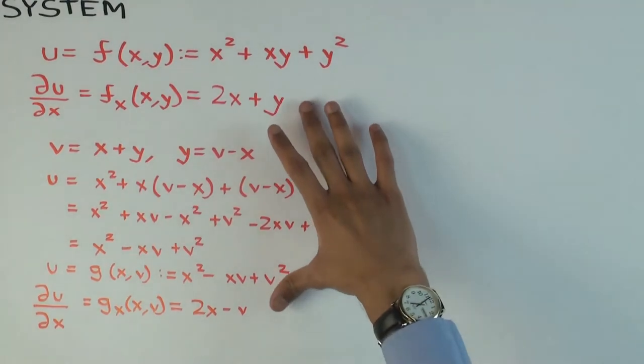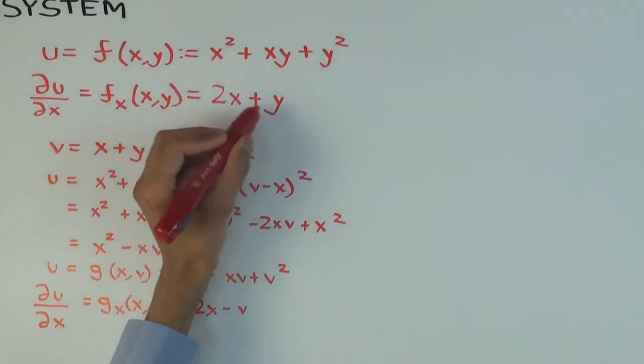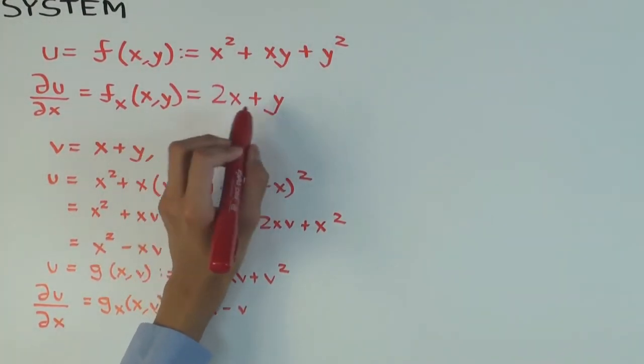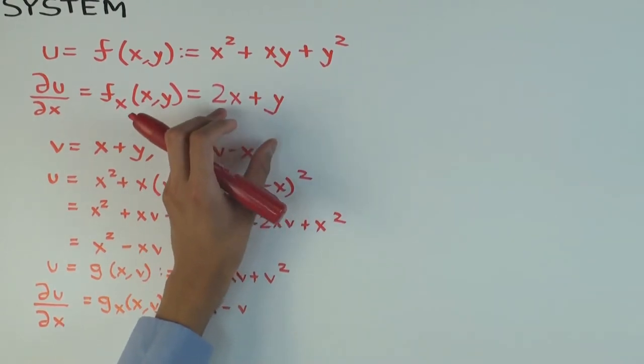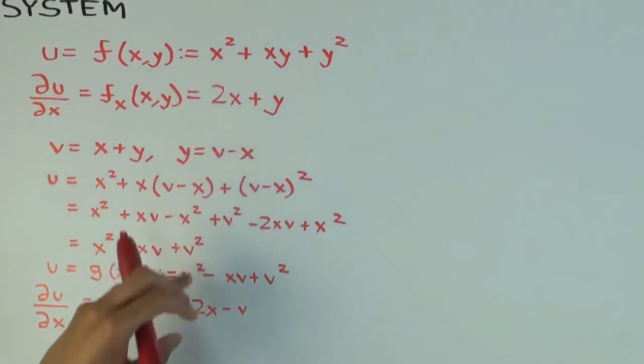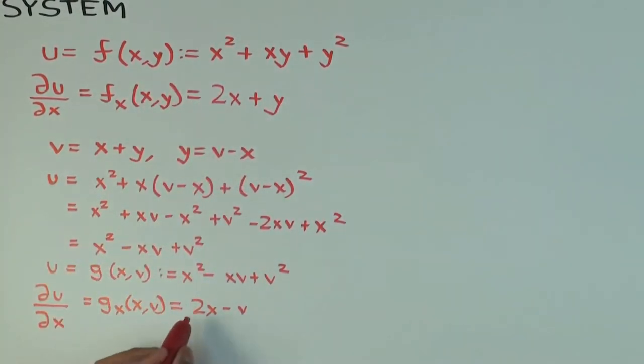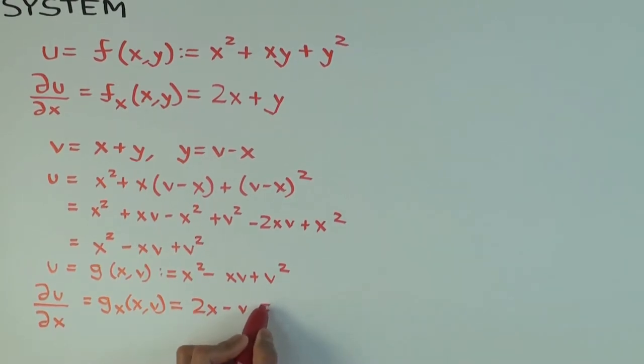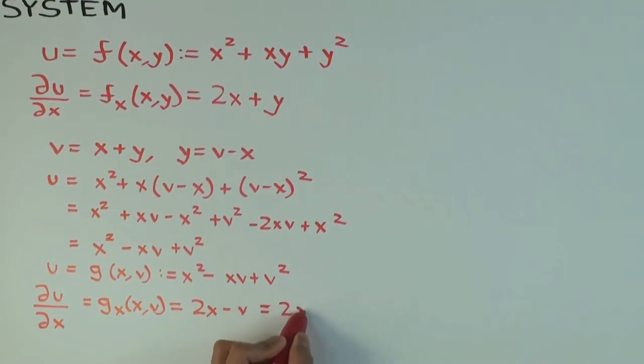So that's how we got this. Now, how do you compare these two answers? Well, right now you cannot compare them because this is in terms of x and v, and this is in terms of x and y. In the previous example, which is done in a separate video, we could directly compare them because both answers were constants. But now we cannot do that. However, you can do that with a little effort. So rewrite v back in terms of x and y, what do you get? So 2x minus? Y.